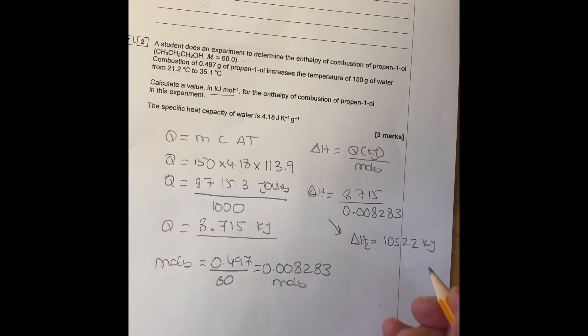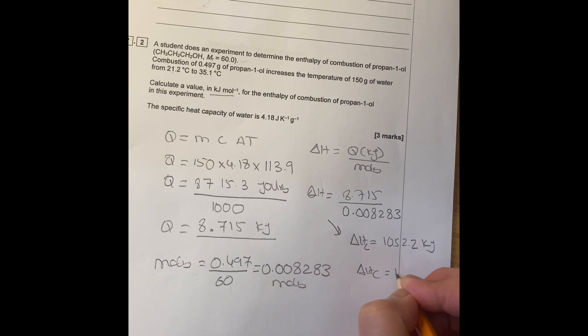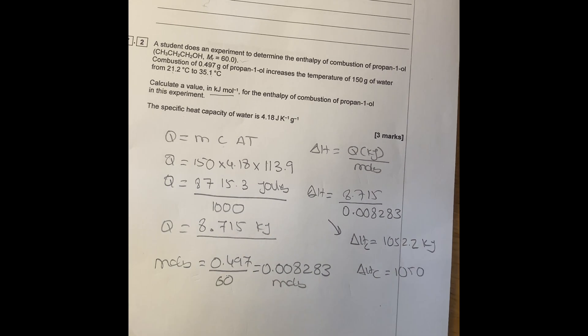Then you change that for three sig figs. So it'll be delta H combustion, which is 1050 kilojoules.